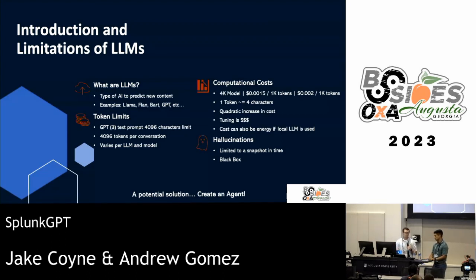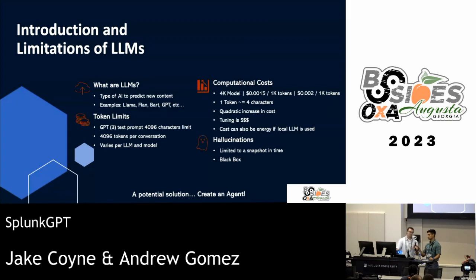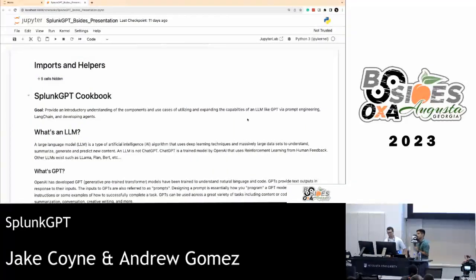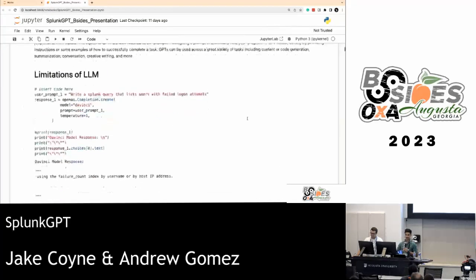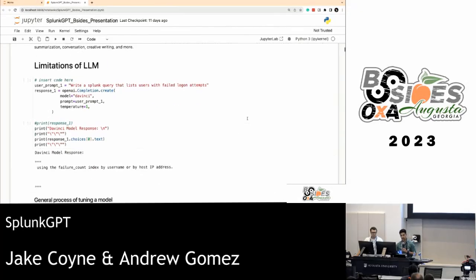One of the solutions we implemented was the use of agents. But before we get into that, I want Andrew to walk through some key points in the notebook. We developed a cookbook to walk people through things if they wanted to learn on their own. When it comes to the limitations of an LLM — we mentioned hallucinations, and we also don't really know what data it was trained with.